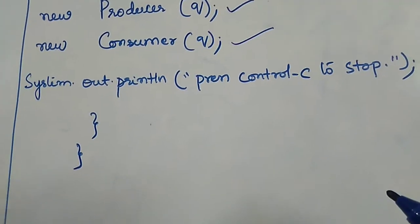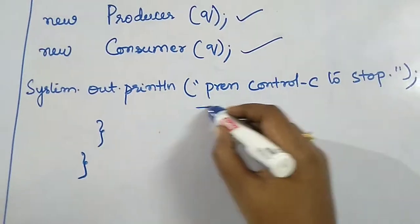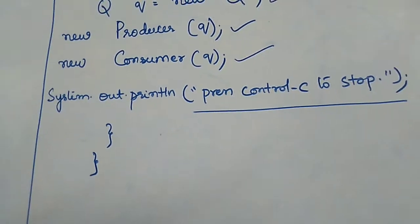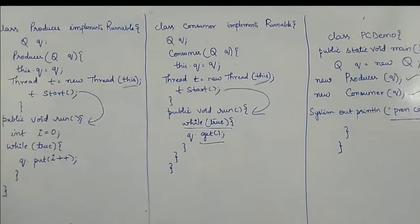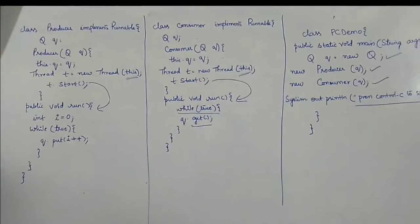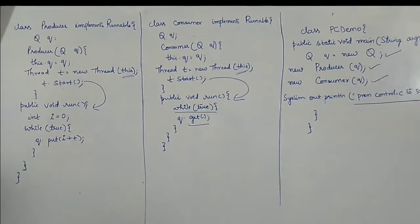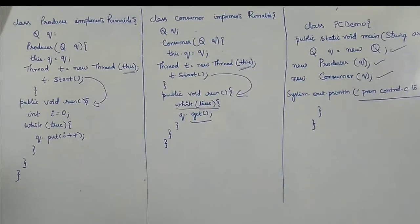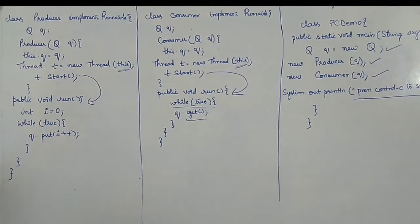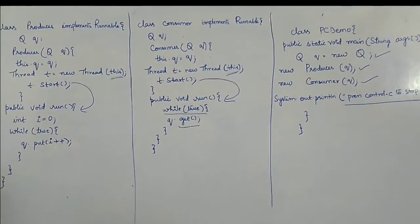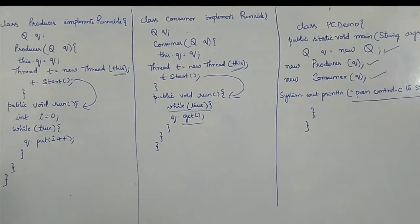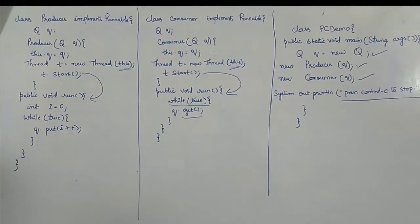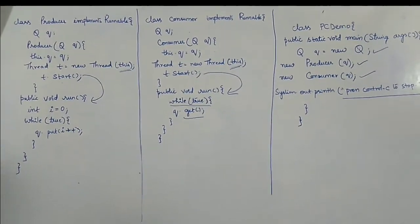Since the while loops inside both the producer and consumer classes run infinitely, you need to press Ctrl+C to stop the program. In total there are four classes: class Q, class Producer, class Consumer, and the driver class PCDemo. The execution of this program will be demonstrated now.